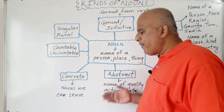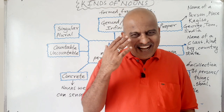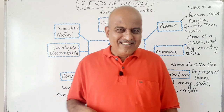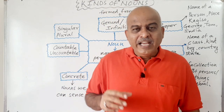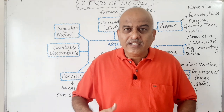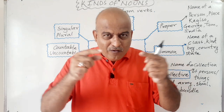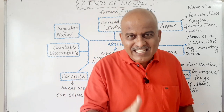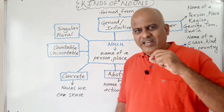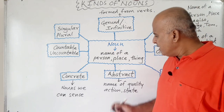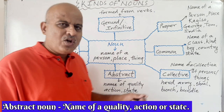Abstract nouns. We have five sensory organs: eyes, nose, ears, taste, and touch. If we cannot feel the noun by using any of these five senses, then that is an abstract noun — which doesn't have shape, size, color, or taste. We cannot hear them, we cannot feel them. Abstract nouns are the names of quality, action, or state.